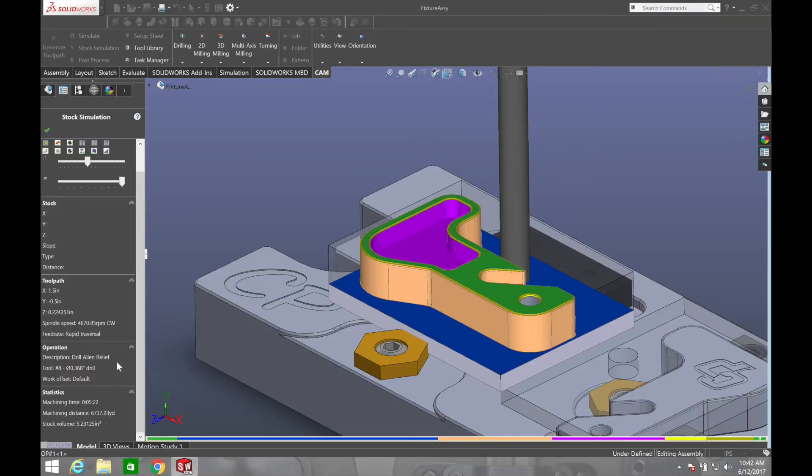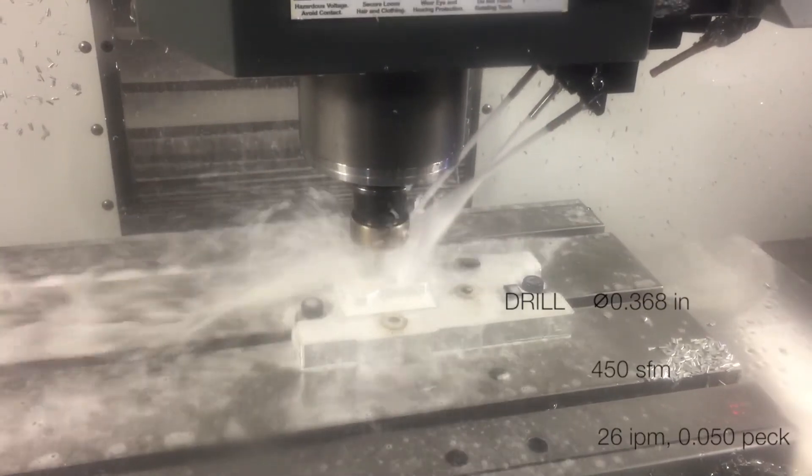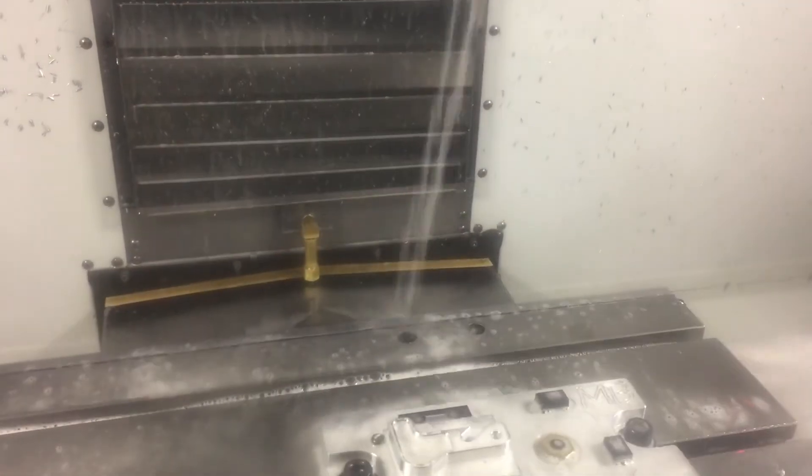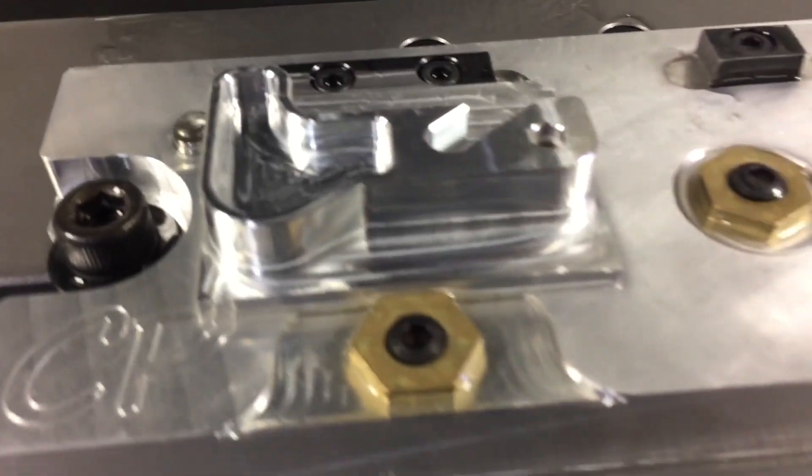A 0.368 inch diameter drill bit will be used to create the access hole necessary to clamp the part for operation two. And that's Op1 finished.